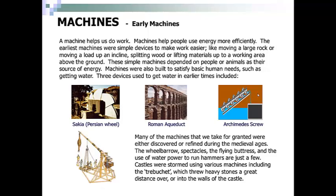Many of the machines that we take for granted were either discovered or refined during the Middle Ages. The wheelbarrow, spectacles or glasses, the flying buttress, and the use of water power to run hammers are just a few. Castles were stormed using various machines including the trebuchet, which threw heavy stones a great distance or into the walls of a castle.